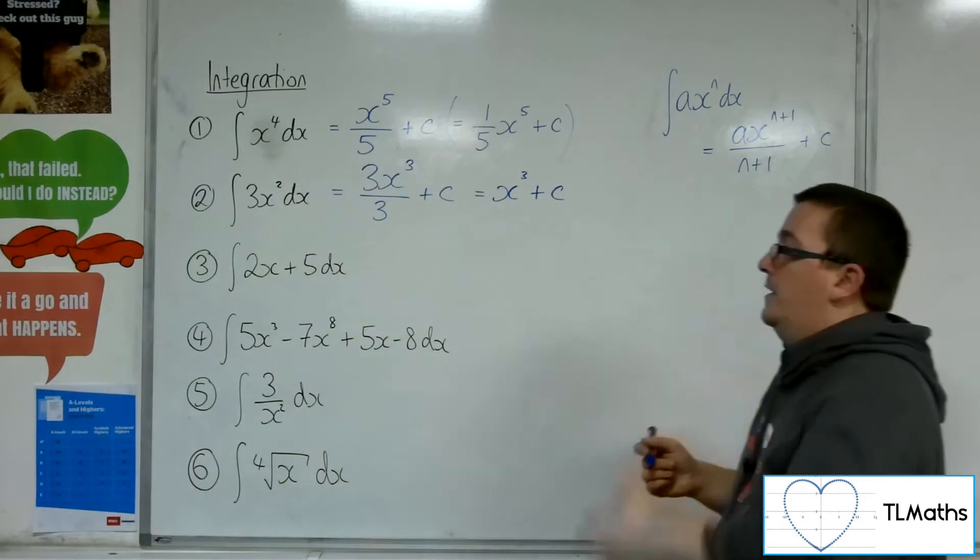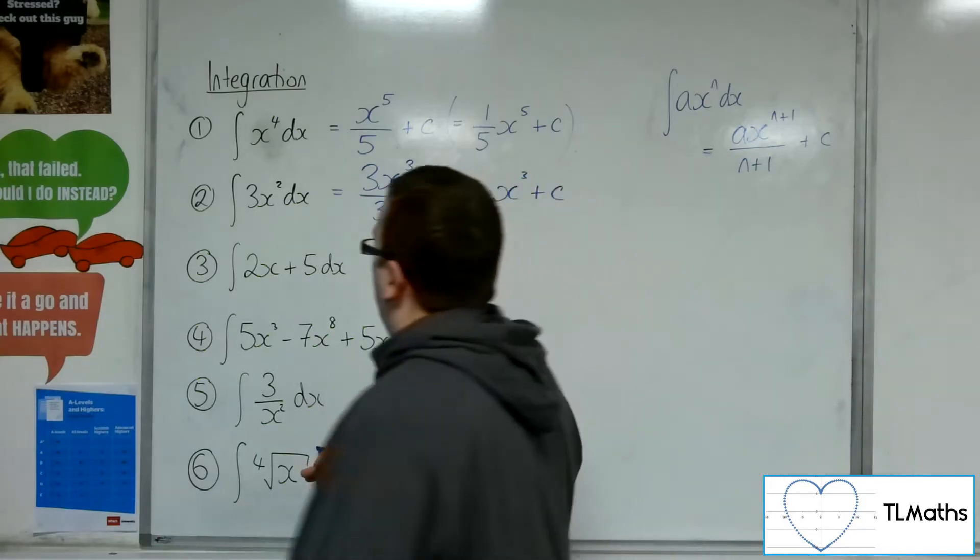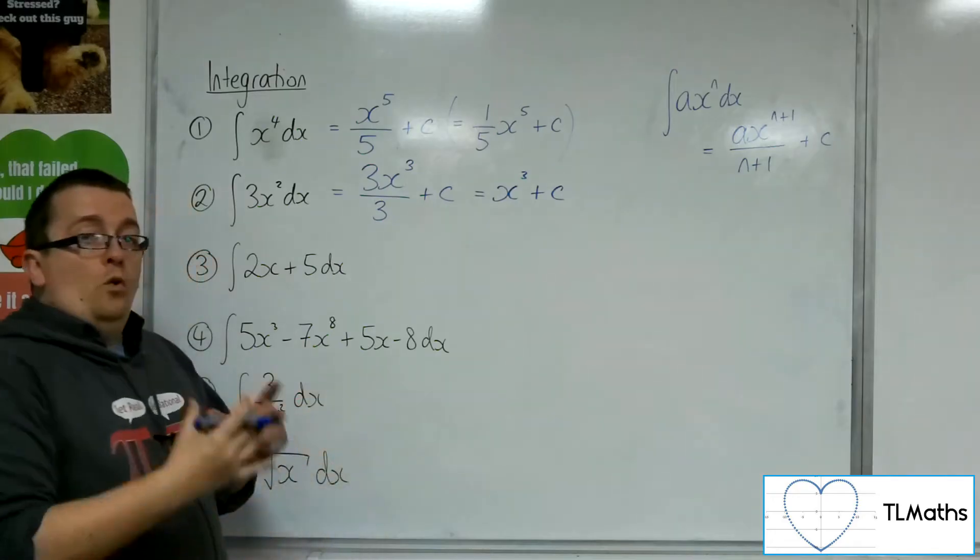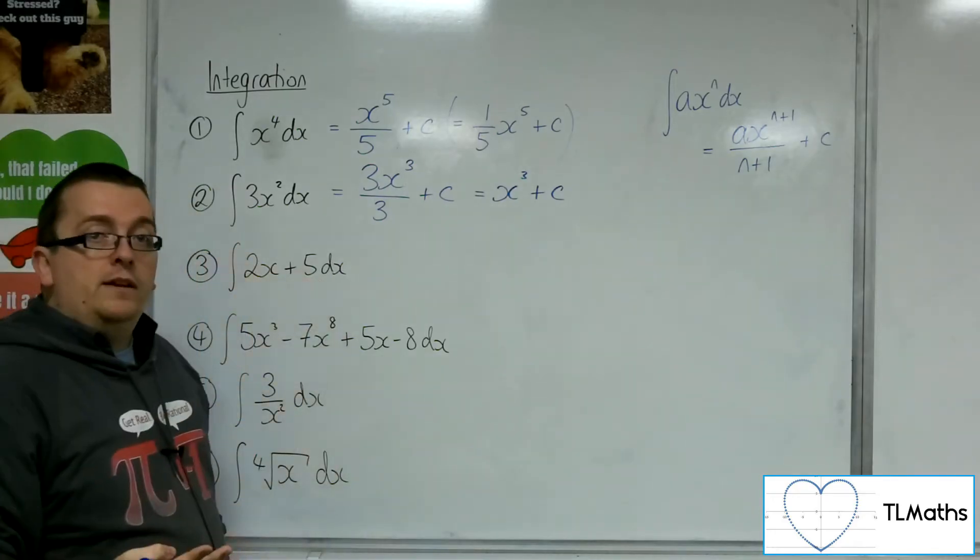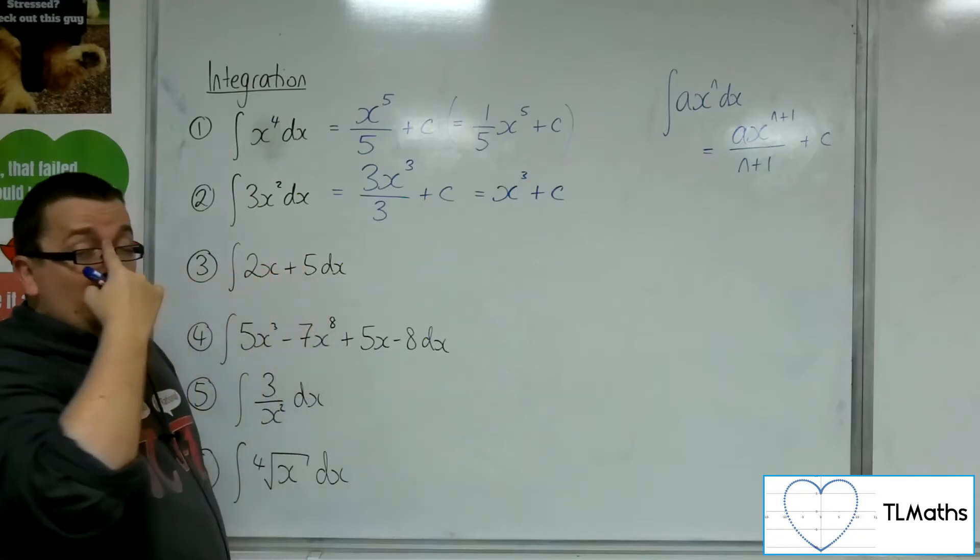So, number 3. We've got the integral of 2x plus 5 dx. Now, integration works by integrating each term separately. You don't just integrate one of the terms, you integrate both of the terms.